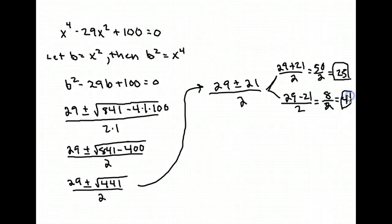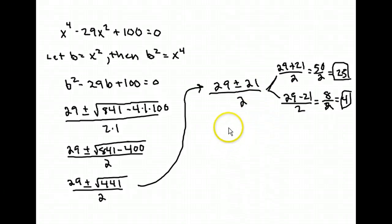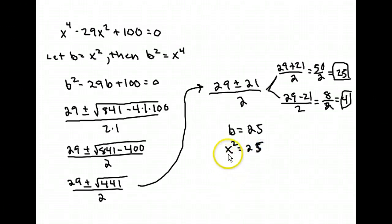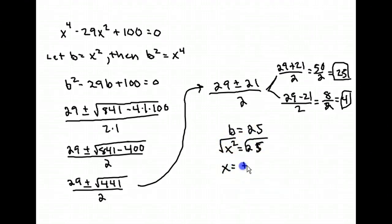Keep in mind this is what b is equal to — you want x, not b. Since b equals x squared, if b equals 25, then x squared equals 25. To solve it, you square root both sides, so x is equal to plus or minus 5.